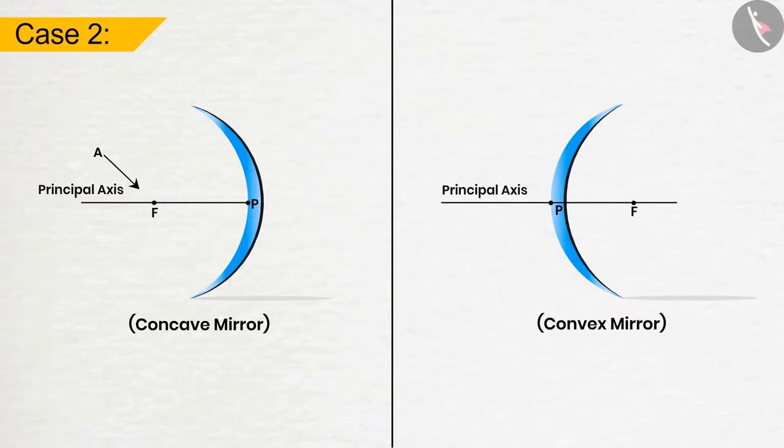Case 2: If the ray of light passes through the focus of the concave mirror or appears to move towards the focus of the convex mirror, it will emerge parallel to the principal axis after reflection.